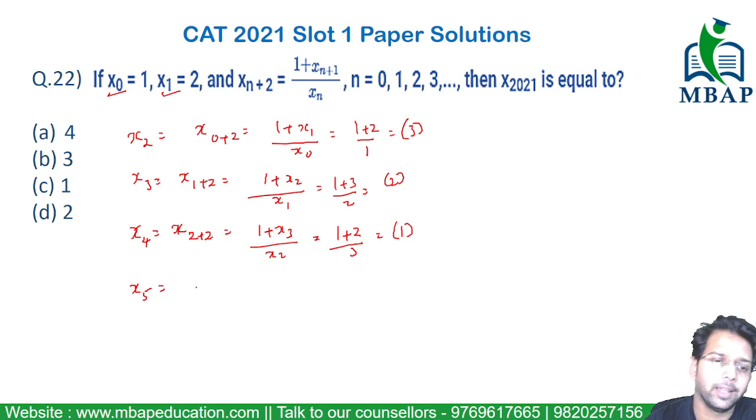Let's move ahead and find the value of x₅. This is x₃₊₂, which is 1 plus x₄ divided by x₃. x₄ you got as 1, so this will be 1 plus 1. x₃ you got as 2, and 2 by 2 will give you 1.